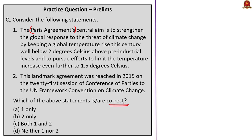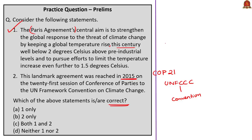This question is with reference to the Paris Agreement. The first statement: the Paris Agreement's central aim is to strengthen the global response to climate change by keeping global temperature rise this century well below 2 degrees Celsius above pre-industrial levels, and to pursue efforts to limit the increase to 1.5 degrees Celsius — correct. The second statement: this landmark agreement was reached in 2015 at the 21st session of the Conference of Parties to the UNFCCC — also correct. The 21st COP was held in Paris.